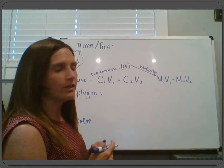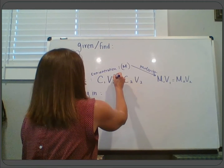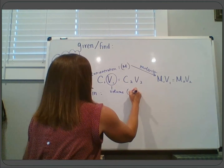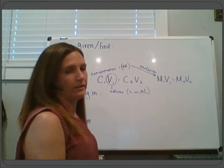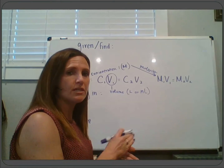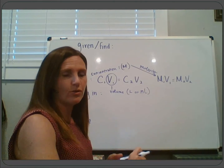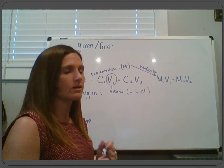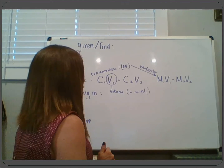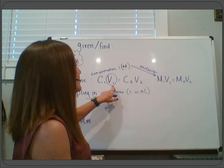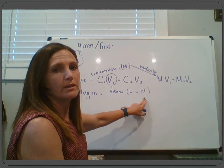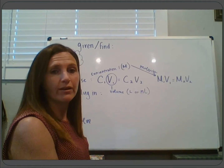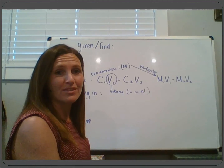V, just like in most of the math we've done this semester, stands for volume. It can be in liters or milliliters. We'll use either C1V1 = C2V2 or M1V1 = M2V2 — whichever works better for you. The volume can be in liters or milliliters as long as we're consistent, and concentration should be in molarity since that's the only unit we've learned.